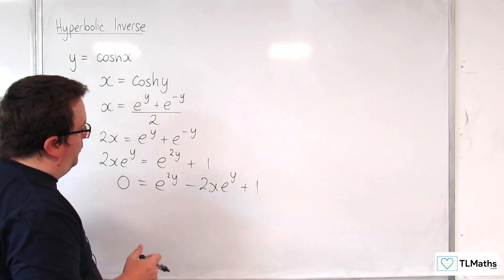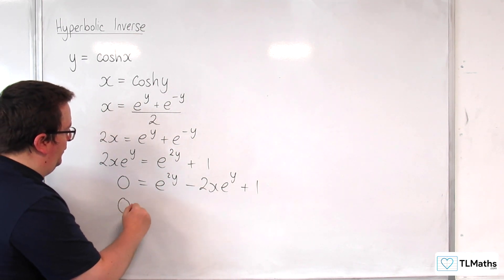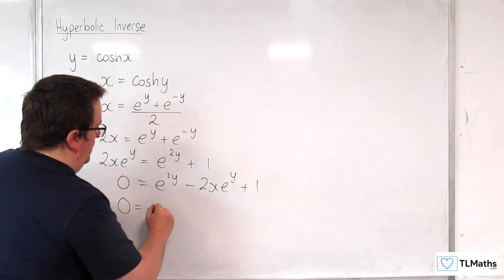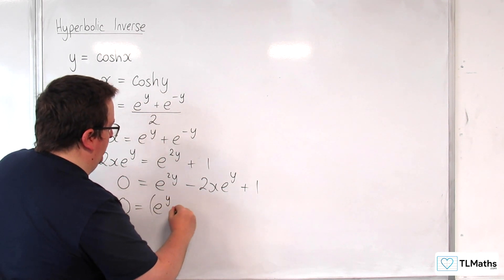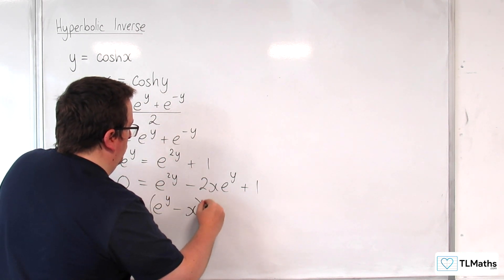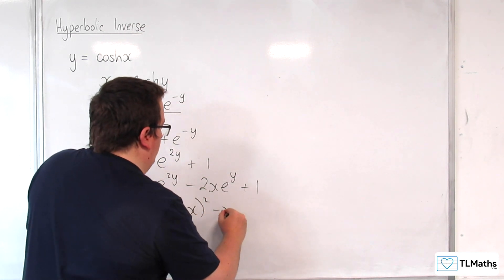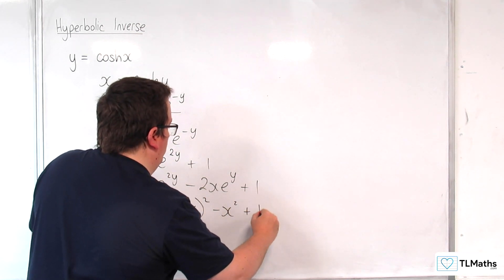Now I'm going to complete the square. So 0 is equal to e to the y, take away x, all squared, take away x squared, plus 1.